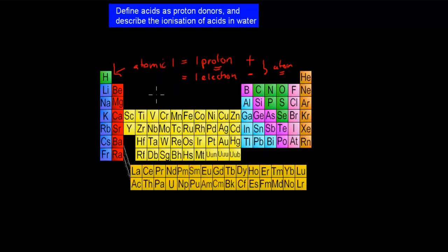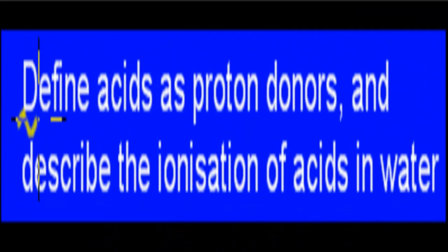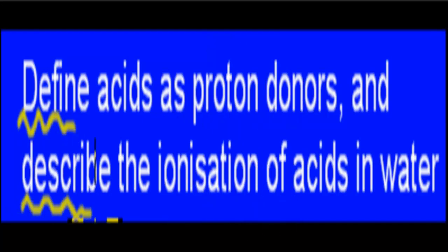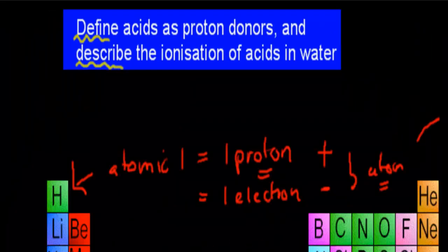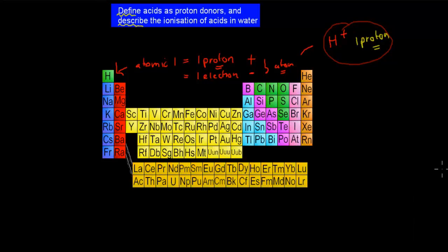But what happens if it loses an electron? Well, if it loses an electron, then it becomes H+. It only has 1 proton and no more electron, so it's more or less just a proton by itself. That's important because the dot point says: define acids as proton donors and describe the ionization of acids in water. Hydrogen ions are more or less simply a proton, so often when we talk about proton donors, we're actually talking about hydrogen itself, or hydrogen ions.